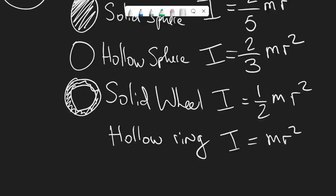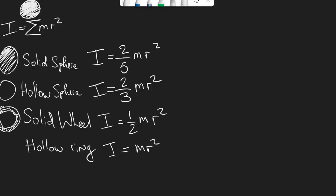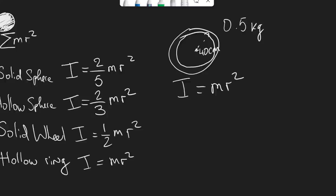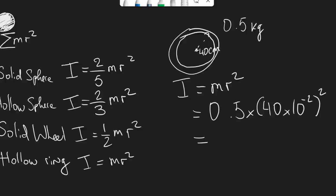These formulas will always be given in the question. Let's do an example: imagine a bike tyre with a weight of 500 grams — about half a kilo — and a radius of 40 centimetres. The moment of inertia is I = MR squared for a hollow ring, giving 0.5 × (0.40)², which equals 0.08 kg·m².